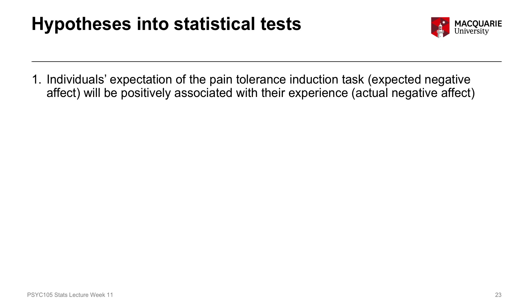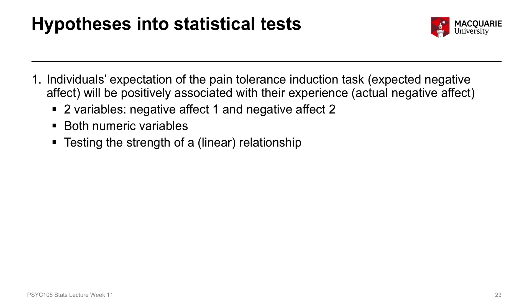Hypothesis one is that individuals' expectation of the pain tolerance induction task — their expected negative affect — will be positively associated with their actual experienced negative affect. We've got two variables: negative affect one and negative affect two, both numeric. What we want to do is test the strength of a linear relationship, and a correlation will do that for us because a correlation tests the strength of a linear relationship between two numeric variables.